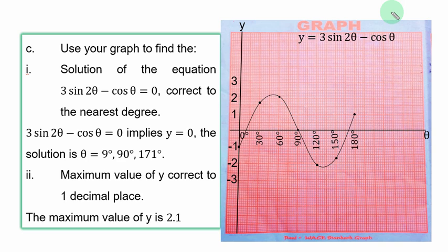We move to part C of the question. Use your graph to find the solution of the equation. This is the equation that we just plotted. So its solution means y is equal to 0. And that is the point where the curve cuts the theta axis. The solution here implies y equal to 0, and that is the point where the curve cuts the theta axis. And we have three points.